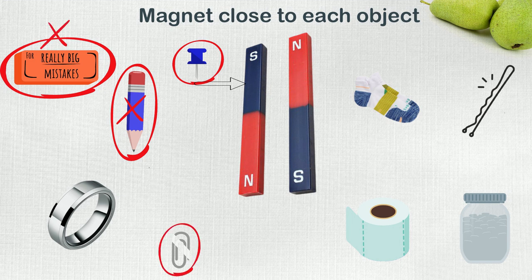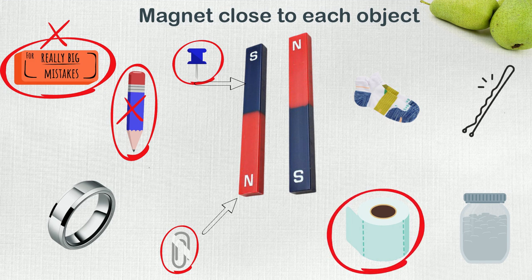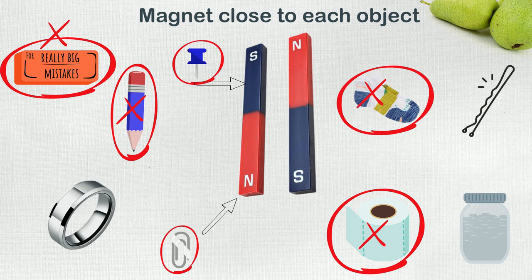Wow, the paper clip stuck to the magnet too, but the tissue paper and the sock did not. See, the magnet pulled up the hairpin and the steel ring.